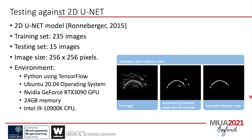For testing against the machine learning method, a 2D U-Net model published by Ronneberger in 2015 was used. The training dataset was 235 randomly selected images, and the test set was 15 independent images. All images were resized to 256×256 pixels. The training environment was Python with TensorFlow on an Ubuntu machine with a good level of GPU and CPU. The image masks for training 2D U-Net were produced semi-automatically using our previous method to generate an initial mask, with noisy signals removed manually before training.